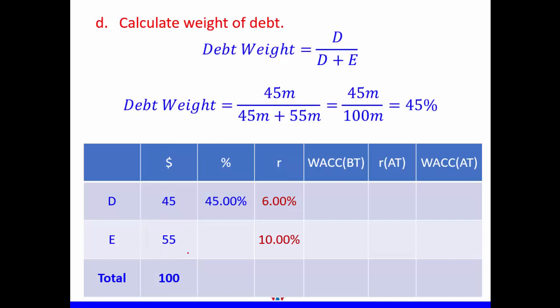The next part is to calculate the weight of debt, or percentage of debt. This is market value of debt divided by the total: $45 million divided by $100 million gives us 45%. This is also called the weight of debt, percentage of debt, or share of debt.